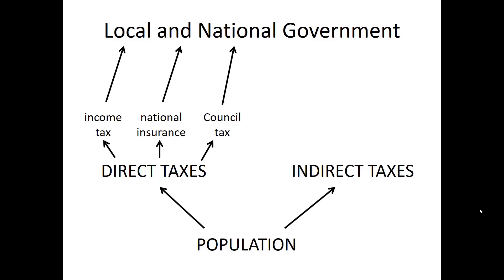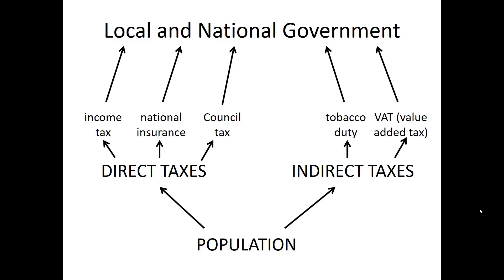Then there are indirect taxes, and the best known one is value added tax. These are taxes already included in lots of things that you buy — a new suit, a pair of shoes, a phone. VAT has already been added and that portion of what you pay goes straight to government. There are also special ones like tobacco duty — a huge proportion of every packet of cigarettes goes to the government — and fuel duty, where quite a chunk of every litre of petrol you buy goes back to government.